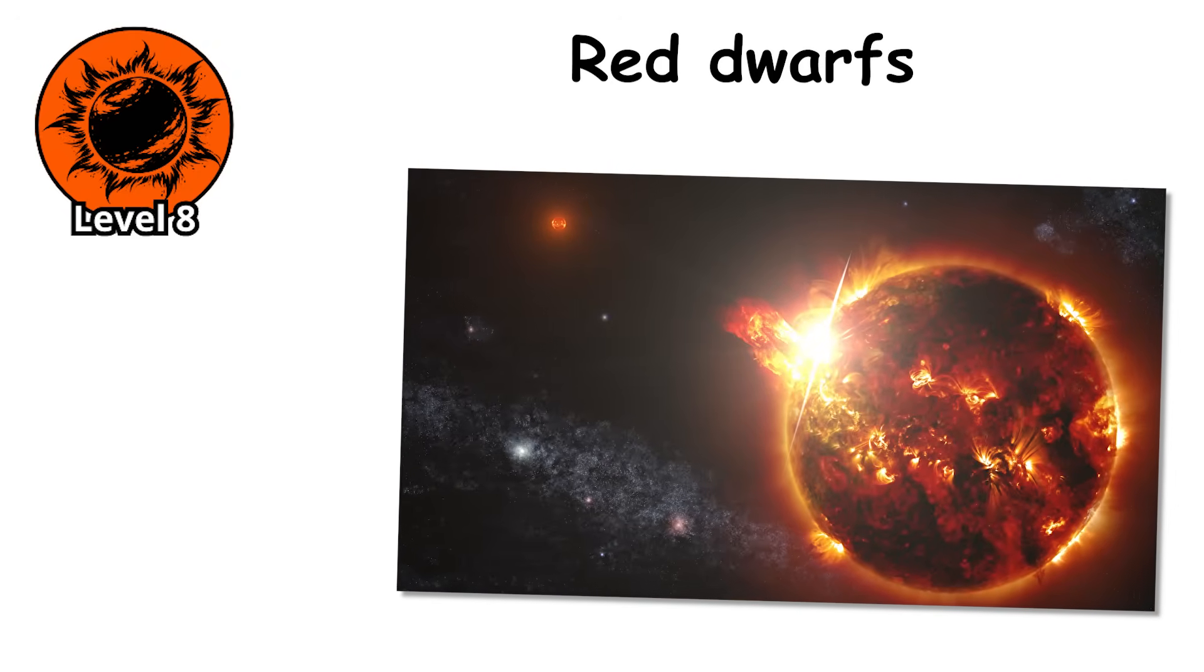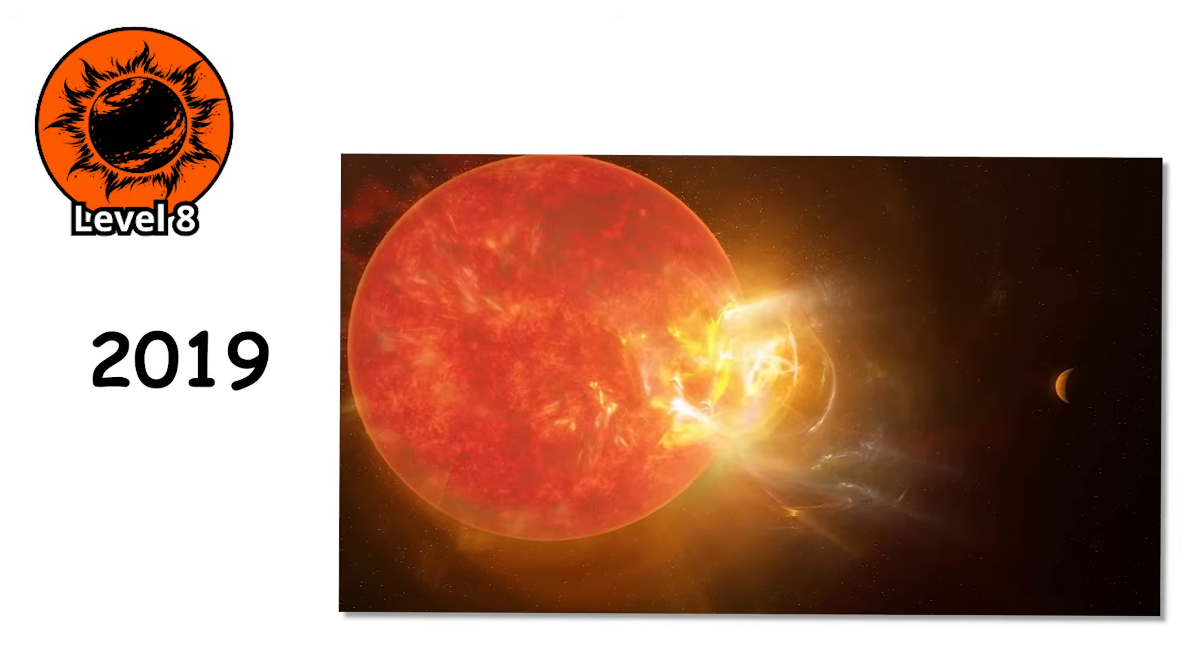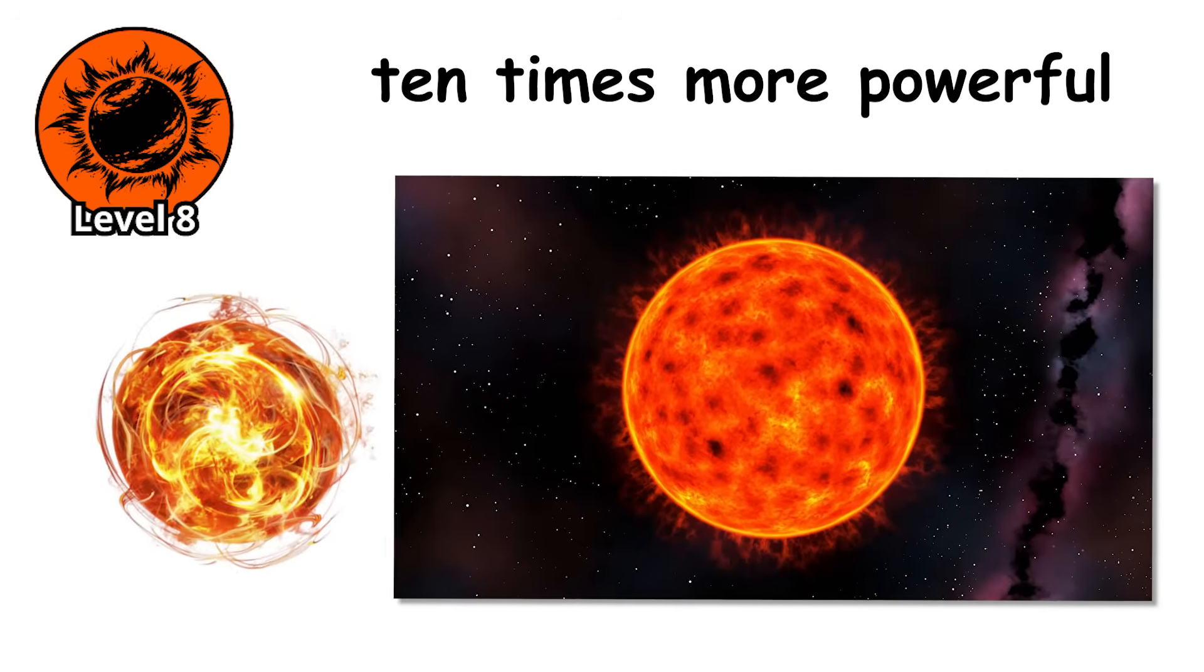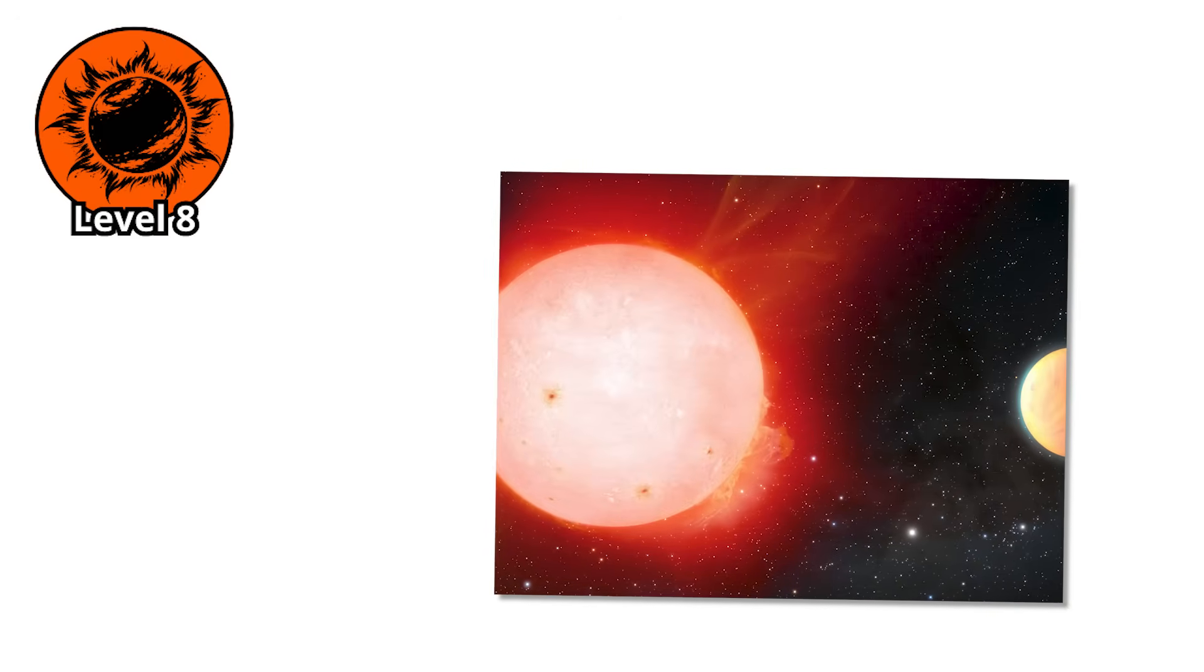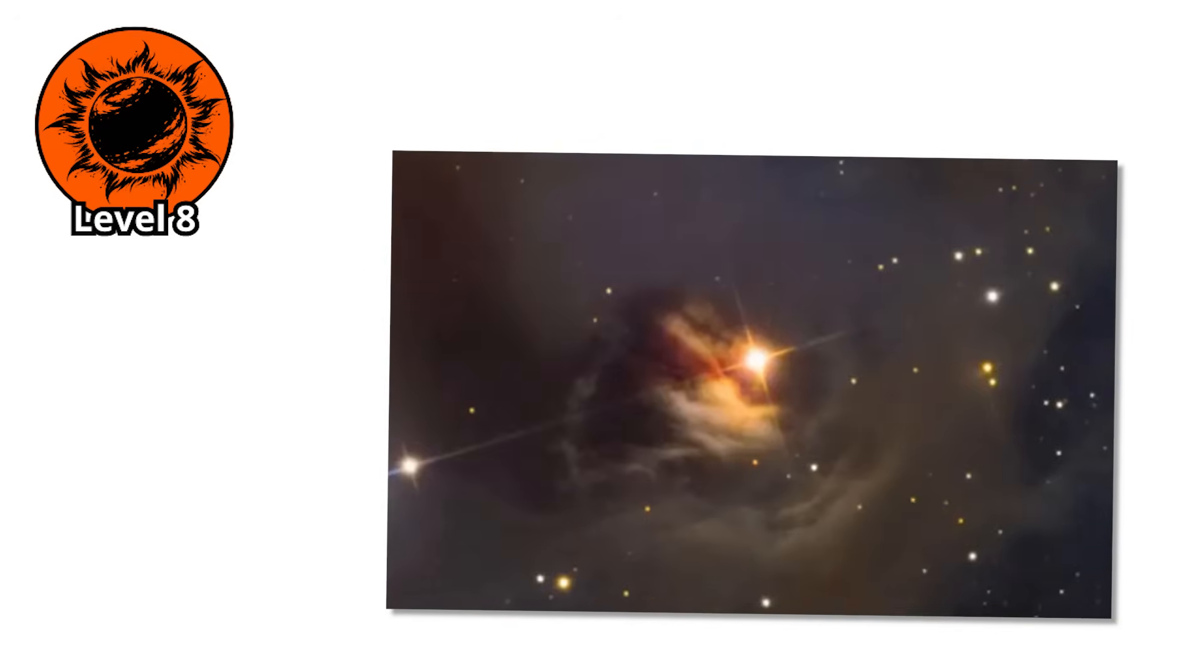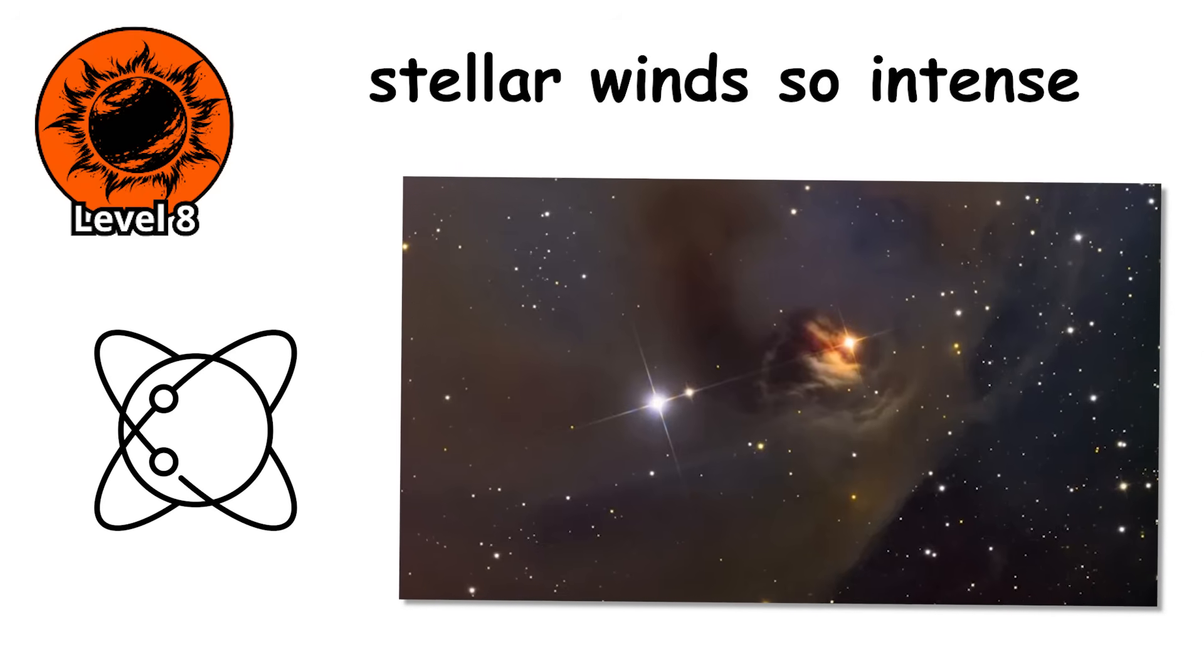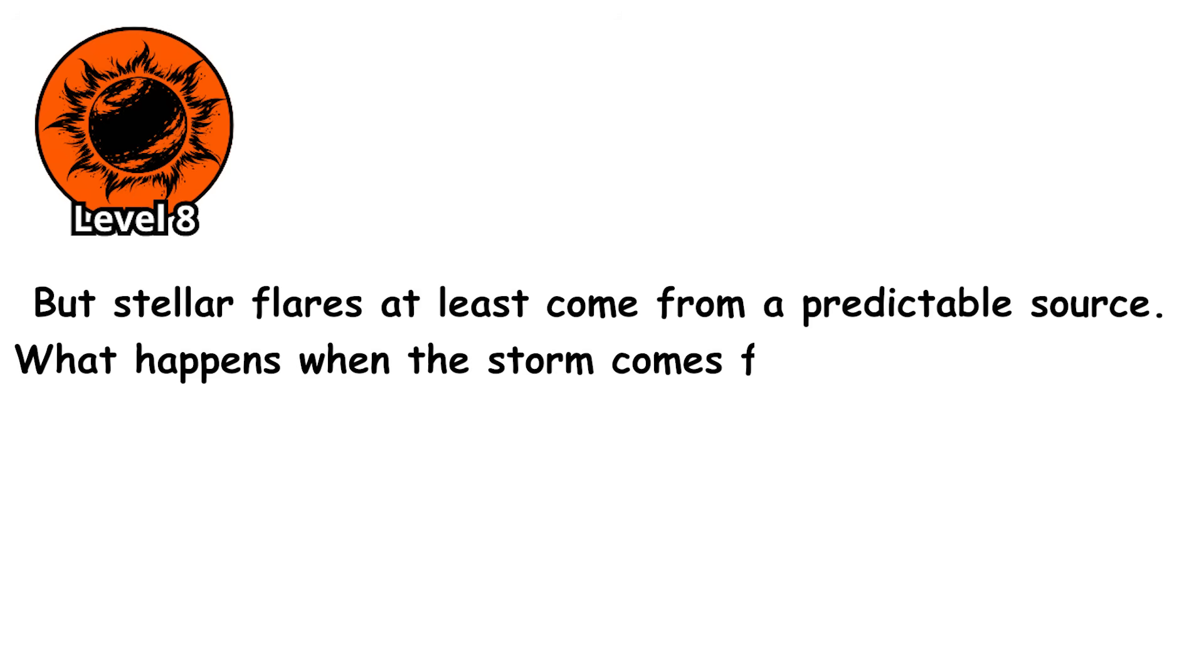Red dwarfs, the most common type of star in the galaxy, are prone to massive flares that dwarf anything our Sun produces. In 2019, astronomers observed a flare from the red dwarf star Proxima Centauri that was 10 times more powerful than the most intense solar flares we've ever recorded. Proxima Centauri has at least one confirmed planet orbiting in what would otherwise be the habitable zone. But habitability becomes meaningless when your star randomly blasts the planet with extreme ultraviolet and X-ray radiation. Any atmosphere would be partially stripped with each flare. Young stars are even worse. T Tauri stars, still in their formation stage, can have flares 10,000 times more powerful than the Carrington Event. Planets forming around these stars are bathed in radiation and stellar winds so intense that atmospheres can't accumulate. But stellar flares at least come from a predictable source. What happens when the storm comes from the galaxy itself?